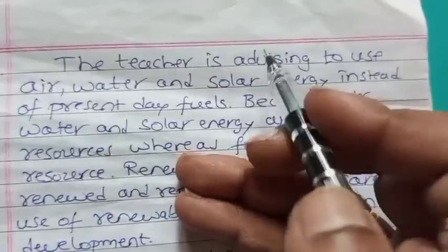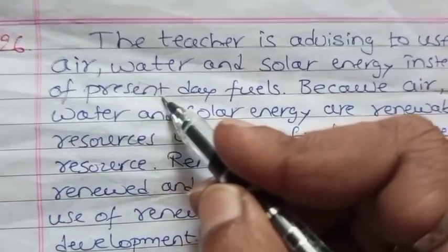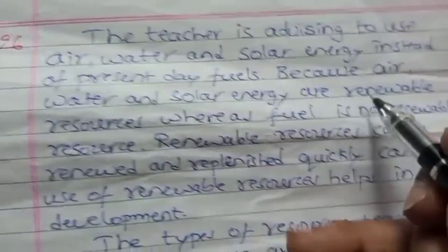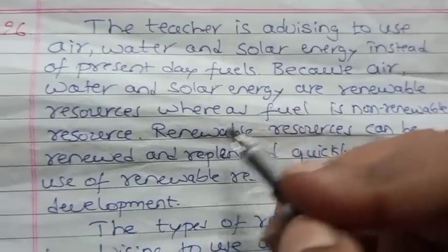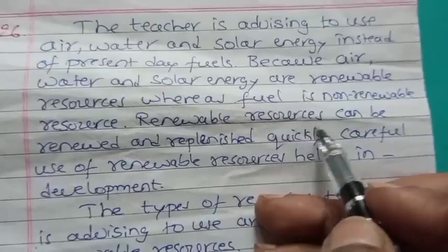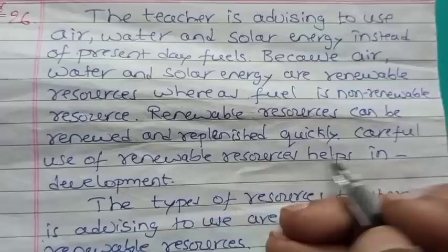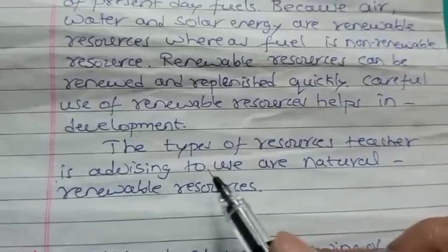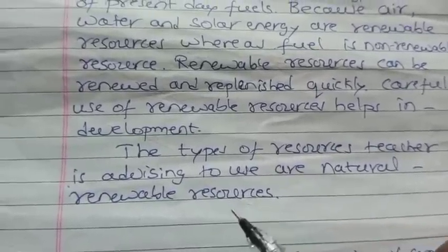The teacher is advising to use air, water, and solar energy instead of present-day fuels because air, water, and solar energy are renewable resources whereas fuel is a non-renewable resource. Renewable resources can be renewed and replenished quickly, and careful use helps in development. The types of resources the teacher is advising to use are natural renewable resources.